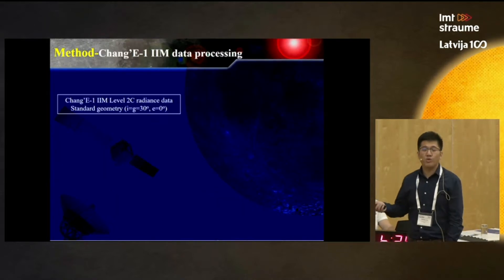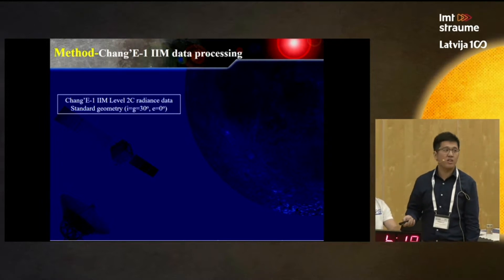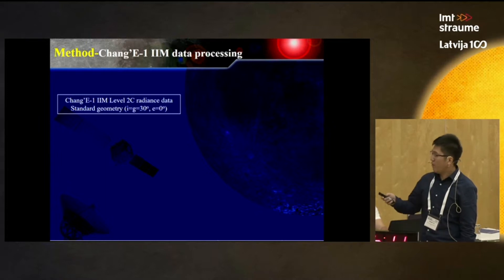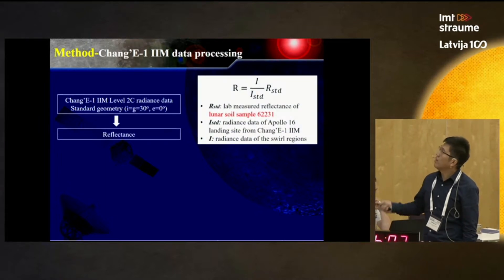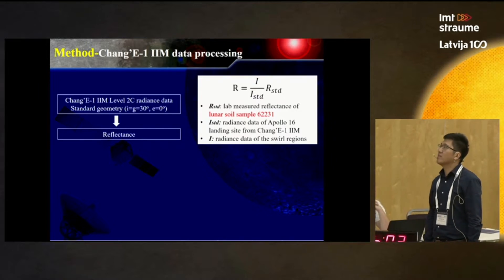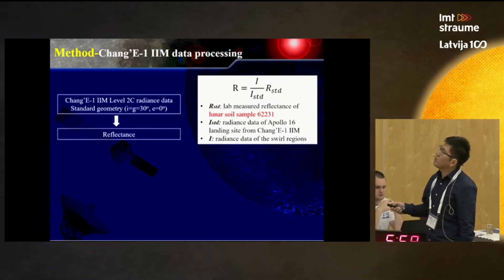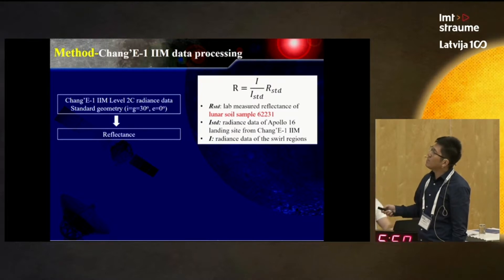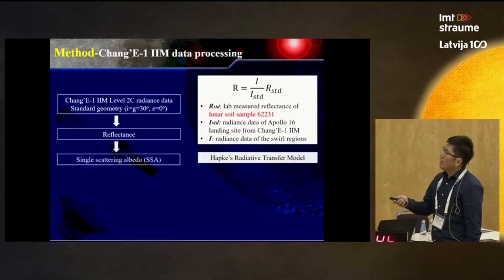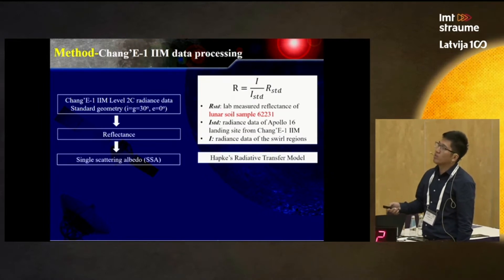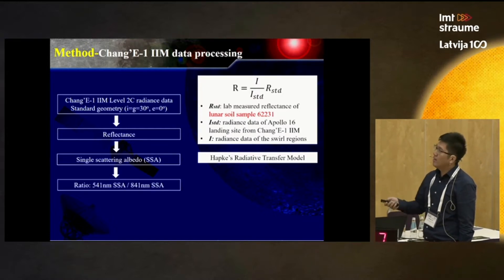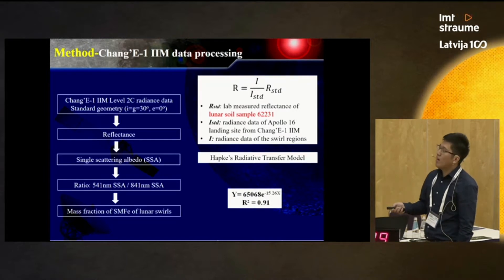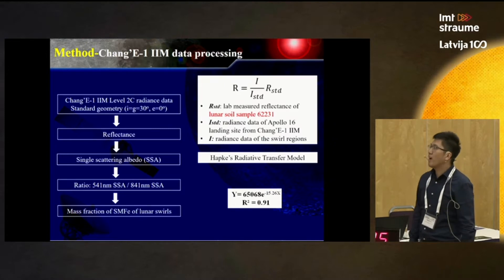We will apply this model to the Chang'e-1 data to estimate the mass fraction of sub-microscopic iron in lunar swirl regions. The Chang'e-1 level 2 radiance data is first converted to reflectance using a calibration equation, where R-STD is the lab-measured reflectance of lunar soil sample 62231 and I-STD is the radiance of the Apollo 16 landing site extracted from Chang'e-1 data. We then use the Hapke radiative transfer model to convert reflectance to single-scattering albedo, take the 540/810 nm ratio, and estimate sub-microscopic iron content.